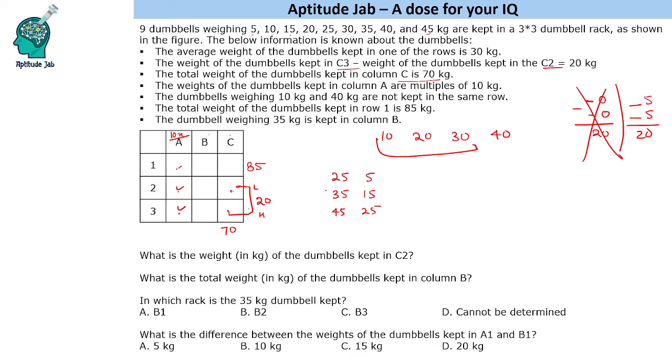Now if you see, one thing is given that 35 kg is kept in column B, so it cannot be 35 and 15. Next, 45 and 25 - if we use 45 and 25, the total becomes 70, then this will end up in 0, which is not possible.